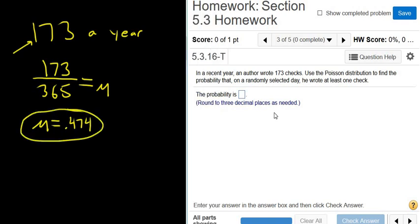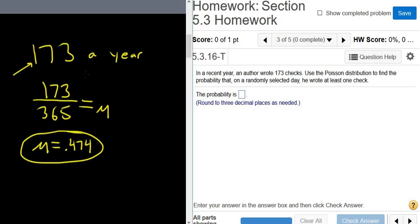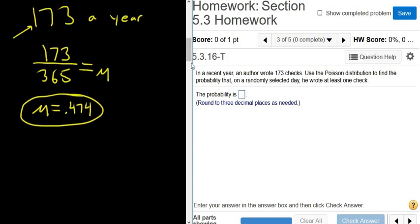The question says, find the probability that he wrote at least one check. So P, let me fix this. P, X is the number of checks, so at least one is greater than or equal to one.